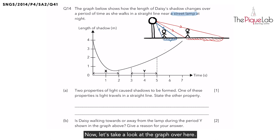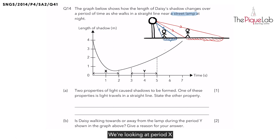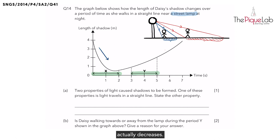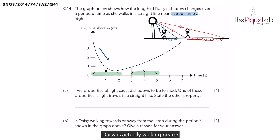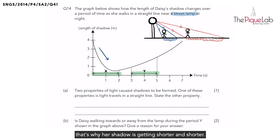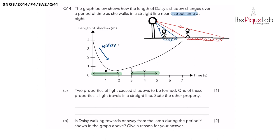Now let's take a look at the graph. They have indicated two periods we should be looking out for: period X and period Y. During period X, we notice that the length of the shadow actually decreases — the shadow is getting shorter and shorter. That means Daisy is walking nearer and nearer to the street lamp. That's why her shadow is getting shorter and shorter. She is walking towards the street lamp.